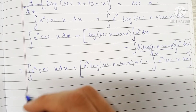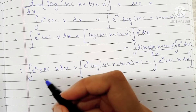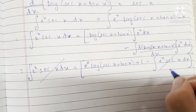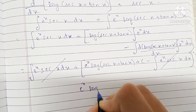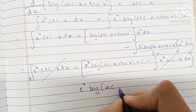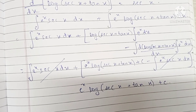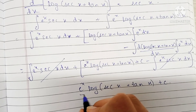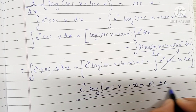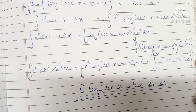As you can see, we have two of the same integrals with opposite signs, which means they get cancelled. We're left with our final answer: e raised to x log(sec x plus tan x) plus c. Since there is no integral term remaining, this is our final answer. That's it for today guys, thank you so much for watching, I'll see you in the next video, bye!